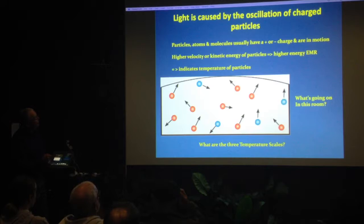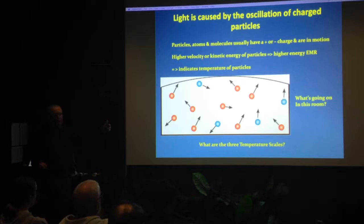So what causes light? The bottom line is light is caused by oscillating or moving charged particles. Every atom, every molecule and particle usually has some sort of charge attached - positive and negative. Everything is moving around all the time. The faster something's moving, the more energy it's got, the higher energy electromagnetic radiation is going to produce.